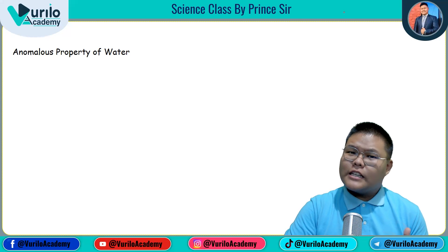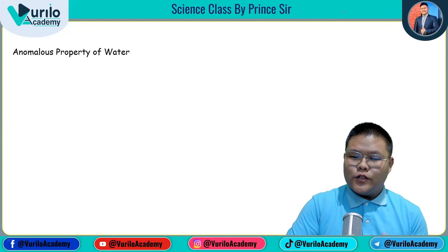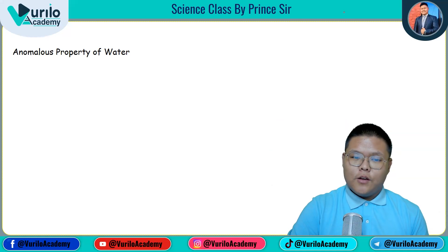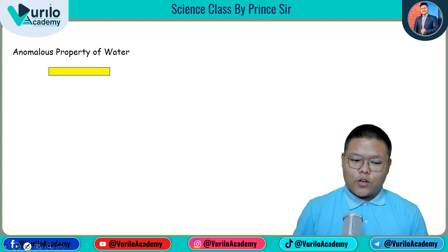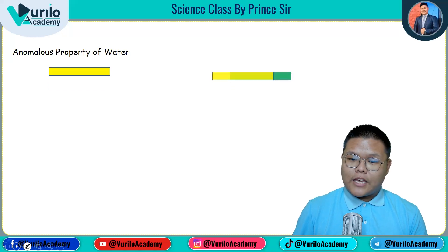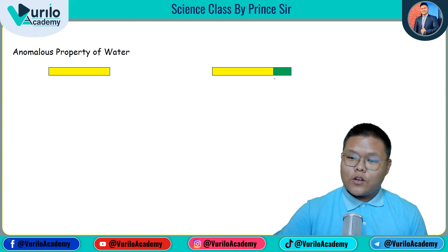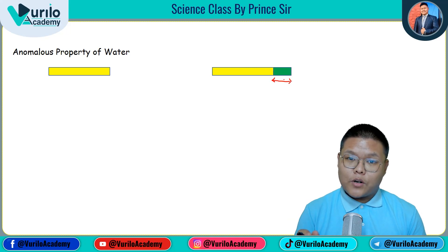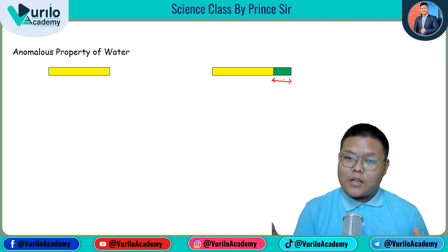We will complete the anomalous property of water. Suppose in this example, I am talking about lots of rods — yellow-colored rods. What do I do here with the rod? I am talking about heat. After the heat, I am talking about this green color. This is the effect of heat — it has a lot of heat in the body.